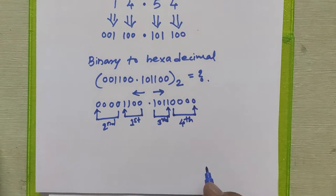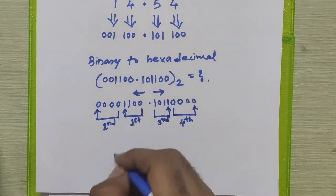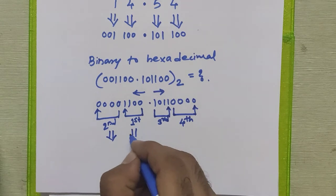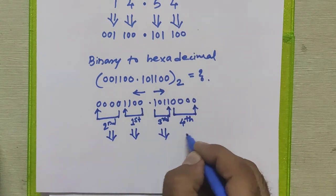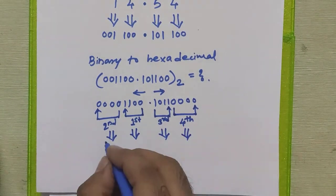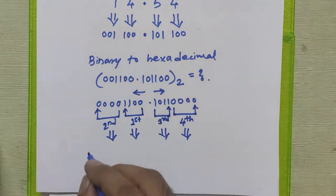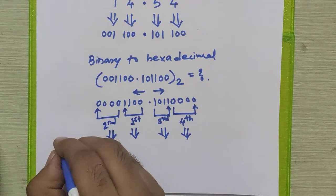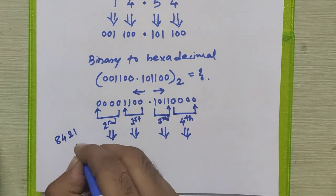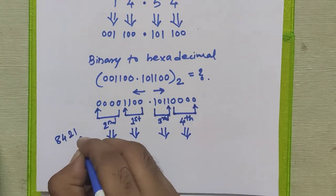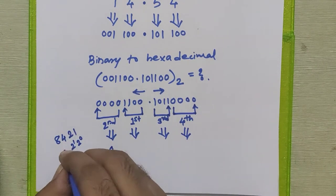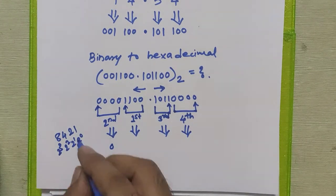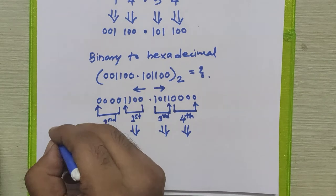Now write the hexadecimal equivalent for these binary bit groups. The hexadecimal equivalent for the first group is 0. We can use the 8-4-2-1 system: 2 raised to 0 is 1, 2 raised to 1 is 2, 2 raised to 2 is 4, 2 raised to 3 is 8. This gives us the 4-bit binary equivalent position values.